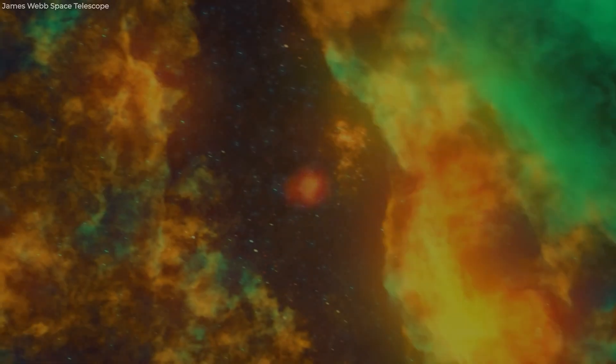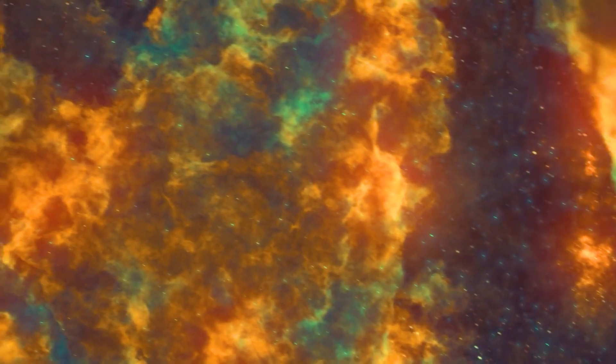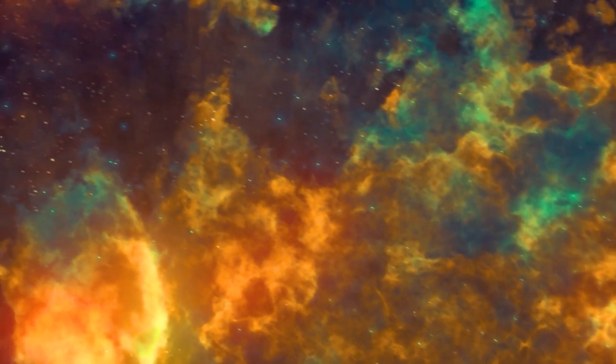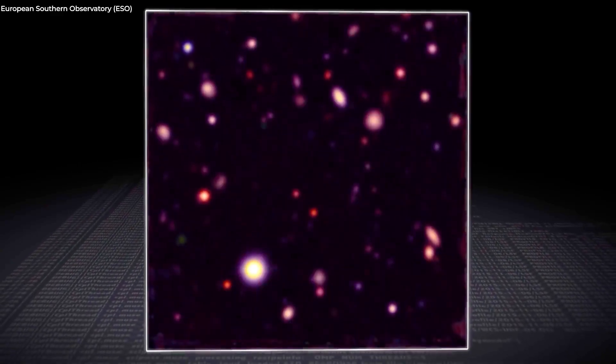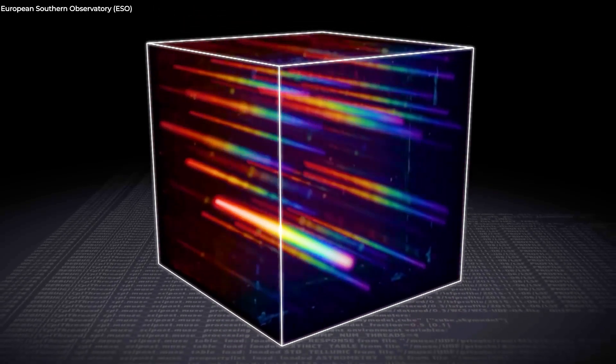A dusty star-forming galaxy is hard to see in optical light, because much of the light from its stars is absorbed by a veil of dust and then re-emitted at redder, or longer, wavelengths.